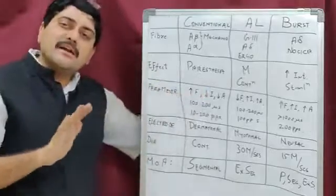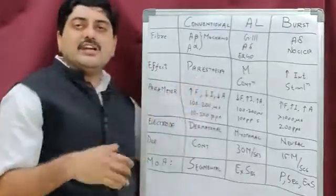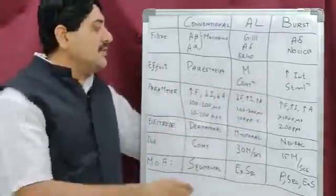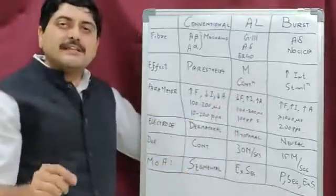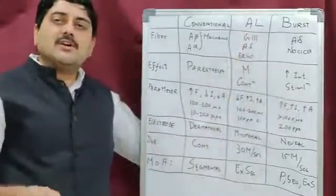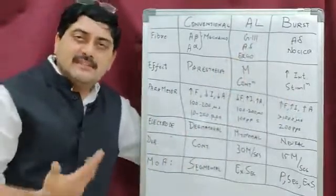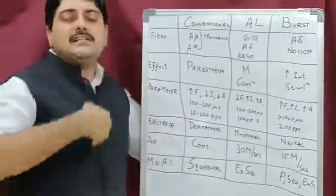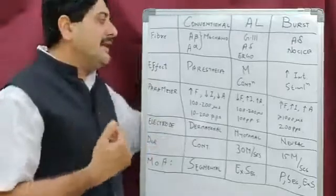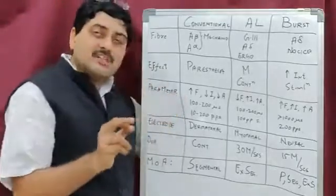The effects of each type: Conventional TENS gives a rubbing effect, creating a local paresthesia, and it works on that basis. AL TENS, the acupuncture-like TENS, works on the basis of muscle contraction or twitch of a muscle. Burst TENS works on increased intensity of stimulation, thereby regenerating the effects of acute pain and acute inflammation.